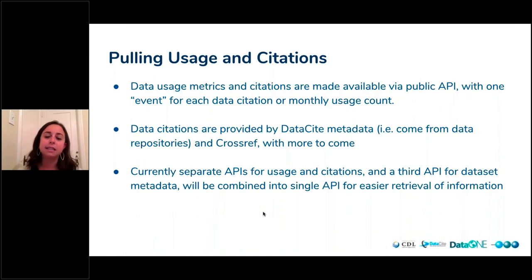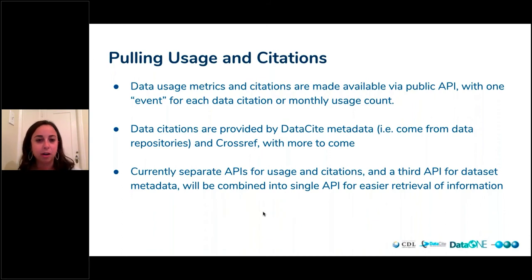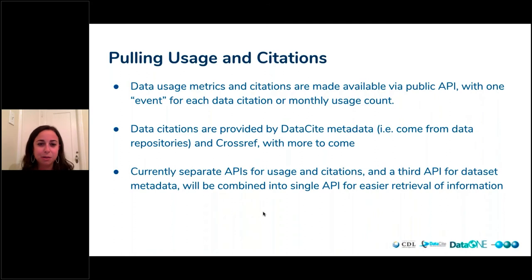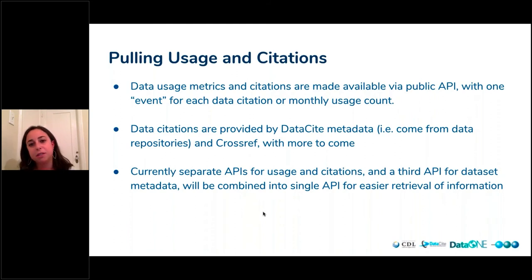What that results in is the slide we showed earlier where you can actually see standardized views, downloads, and citations — not only a count of citations, but what those citations actually are. The big thing is having standardized metrics that allow for comparison. Right now when we're looking at views and downloads across repositories, we're really comparing apples and oranges because we just don't know the different ways everyone is doing that. Our big push is to get as many repositories as possible to start standardizing usage metrics, along with getting publishers to submit data citations so that we can have this cycle really running.